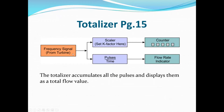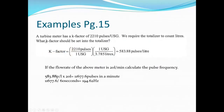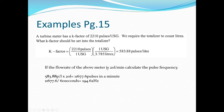Now for totalizer math: a turbine meter has a K-factor of 2,210 pulses per US gallon. To convert to liters: divide 2,210 by 3.785, giving 583.88 pulses per liter as the new K-factor. If the flow rate is 20 liters per minute, the frequency is 583.88 times 20 equals 11,677.6 pulses per minute. Dividing by 60 gives a frequency of 194.62 hertz.